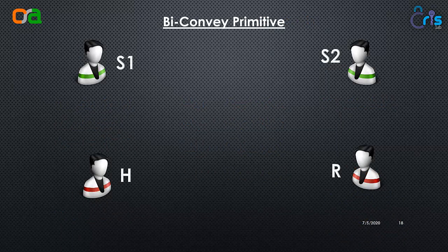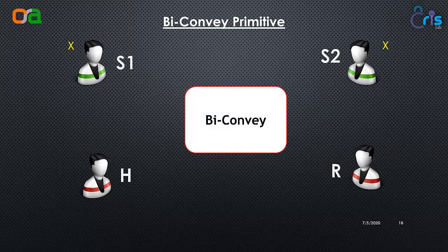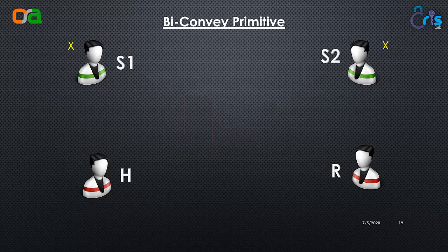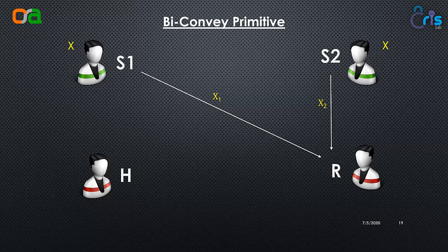Now let's come to our more important primitive, the BiConvey primitive. Here there are two senders S1 and S2, a helper H, and a receiver R. Both senders have a common value X. What the BiConvey primitive does is both S1 and S2 feed their copies of X to the primitive, the helper H assists as the name suggests, and finally the receiver R receives the correct copy of X. Both S1 and S2 send their copy of X to receiver R — but recall one out of four parties can be corrupt, so X1 may not match X2.